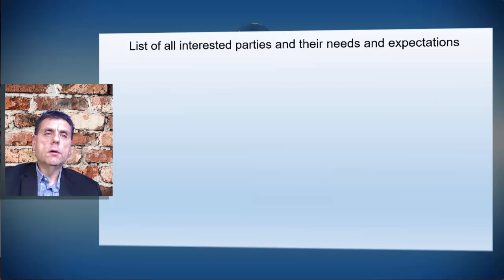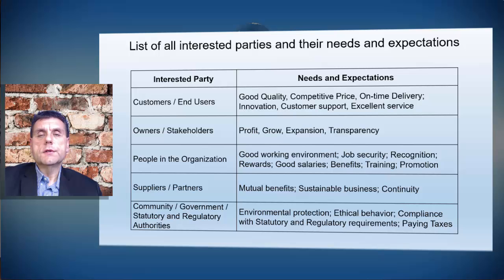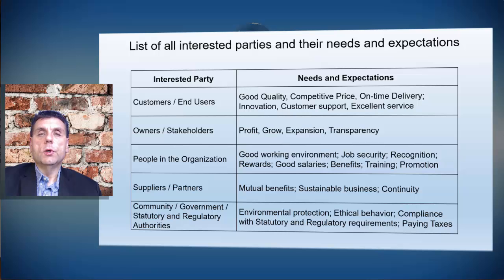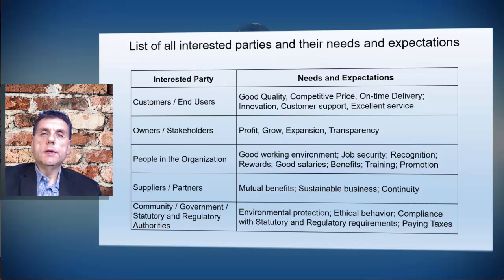How should the list of all interested parties and their needs and expectations look? We have to identify all interested parties in documented information. For example, customers and end users are interested in good quality, competitive price, on-time delivery, innovation, customer support, and excellent service. Owners and stakeholders care about profit, growth, expansion, and transparency.